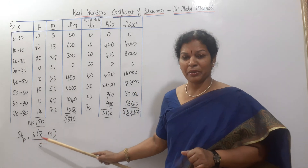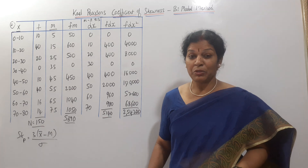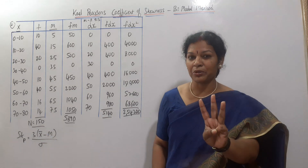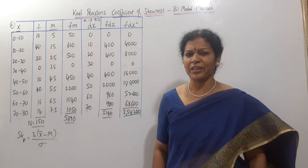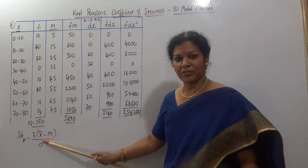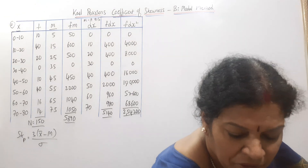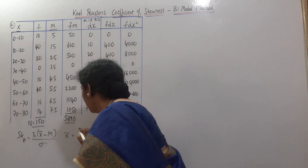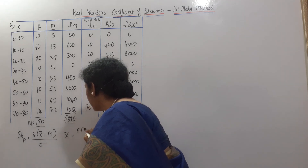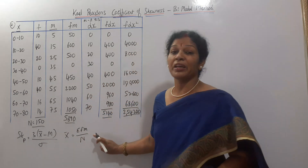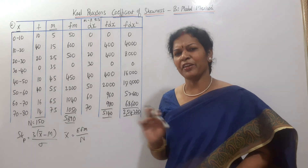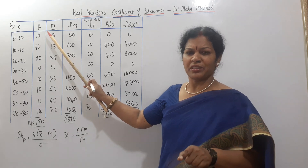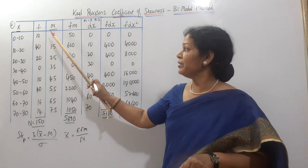Since the formula is 3 into (x̄ minus median) divided by standard deviation, we need to calculate x̄, median, and standard deviation. First we focus on x̄ — the arithmetic mean. The formula is x̄ = Σfm / n. We need to calculate the mid value (m) first, then fm. The mid value is provided — in short, m means mid value.